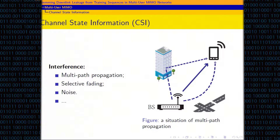Let's begin with CSI. When mobile users communicate with the base station, the signal between the transmitter and the receiver is always interfered with. The interference can be caused by various factors such as multi-path propagation, selective fading, and additional noise. The figure here shows the situation of multi-path propagation. The signal sent from the base station can reach mobile users by line of sight and the reflection of buildings and the ground. The physical channel properties are called channel state information, aka CSI, which describes how the signal is affected by the channel.